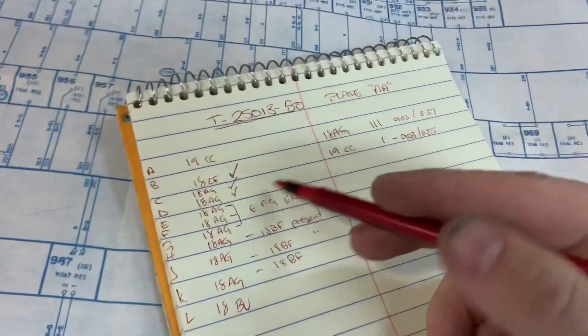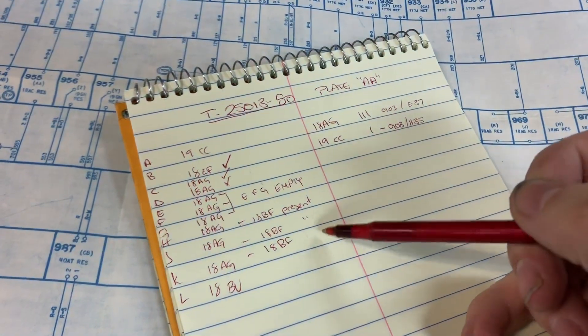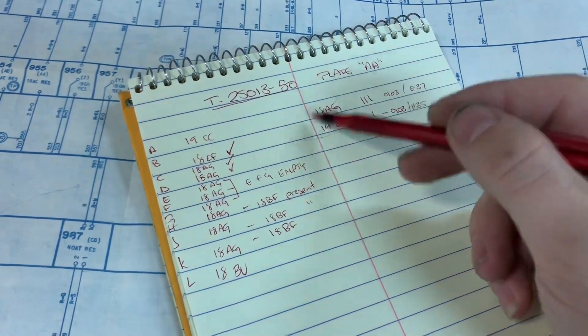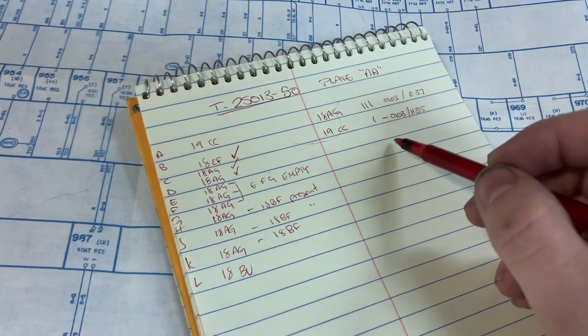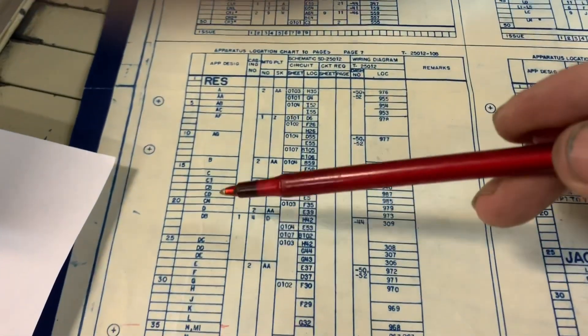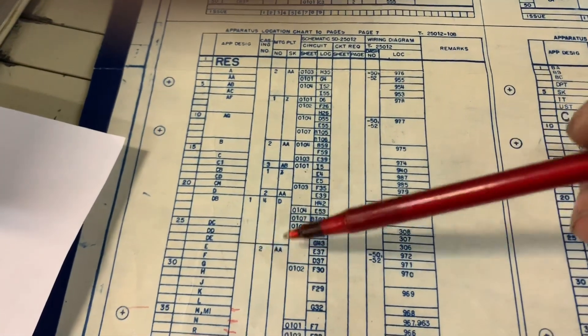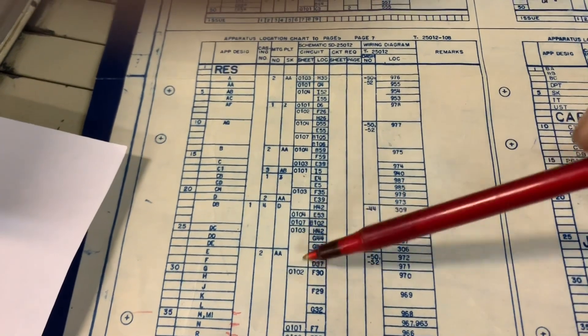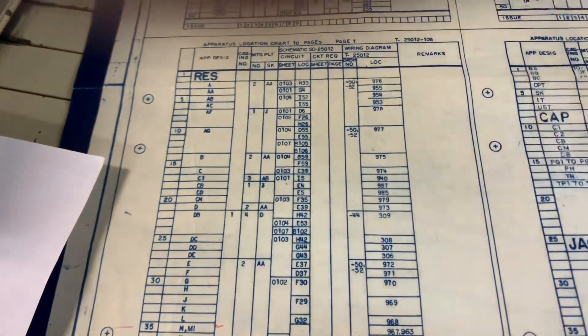So some of these we have and some we don't. So let's cross reference that. Resistors E and F, O103, E and D37.